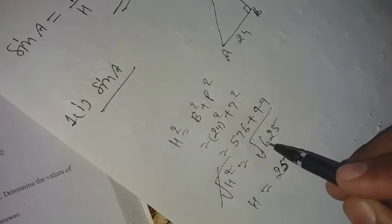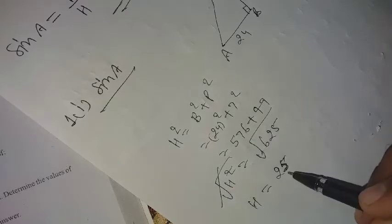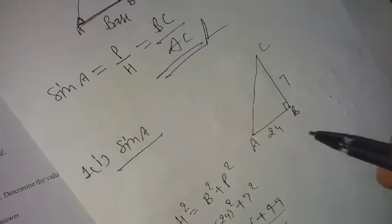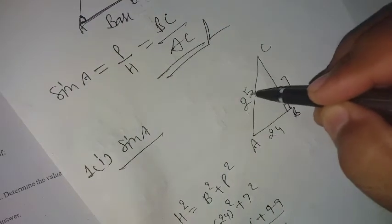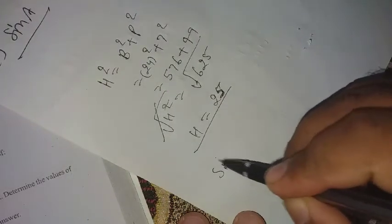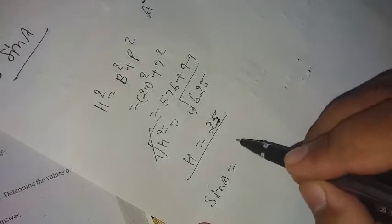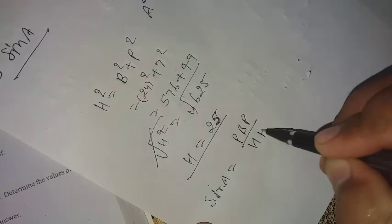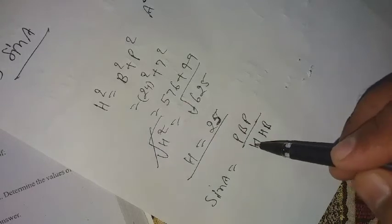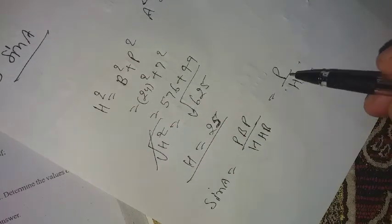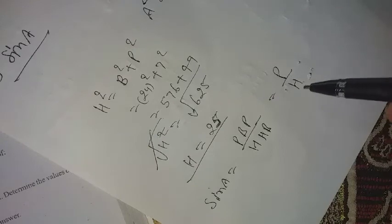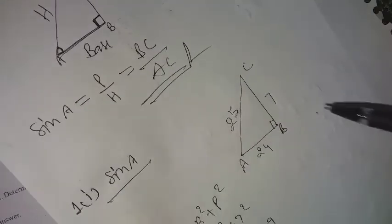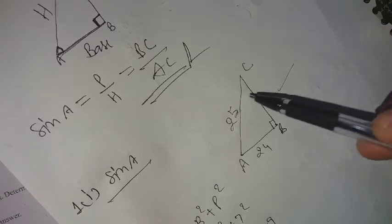Now we take the square root. Root 625 equals 25, so we have 25 as hypotenuse, 25 centimeter. To find sine A, we use the trick 'Pandit Badri Prasad Haray Haray Bol.' For sine A we have P upon H, perpendicular upon hypotenuse. P is 7 and H is 25.